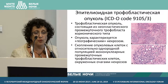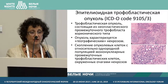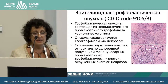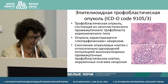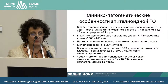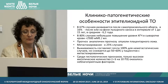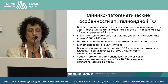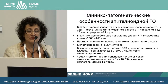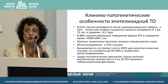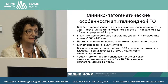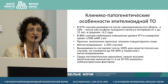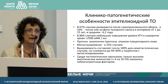Epithelioid trophoblastic tumor is a tumor that has intermediate trophoblast of the chorionic type. It is characterized by geographic type of necrosis, as pathologists describe it, and also a great deal of tumor cell aggregation. It can happen because of spontaneous abortion or at the background of a mole. There can be a gap of 1 to 15 years from the antecedent pregnancy.